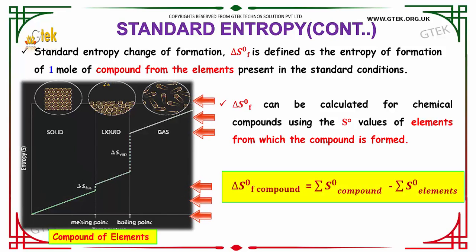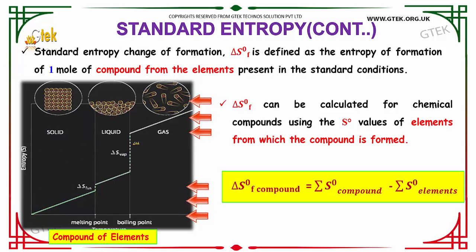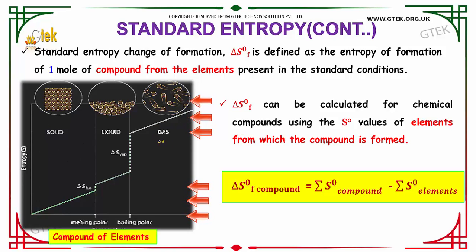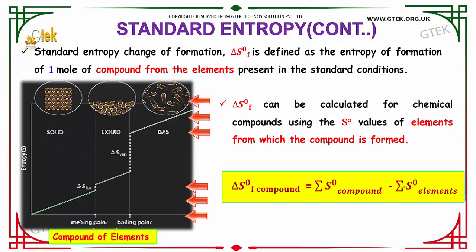The standard entropy change of formation, Delta S degree F, is defined as the entropy of formation of one mole of a compound from its elements under standard conditions. Delta S degree F can be calculated for chemical compounds using the S degree of the elements from which the compound is formed. Delta S degree F of a compound is obtained from: summation of S degree of compound minus S degree of elements.